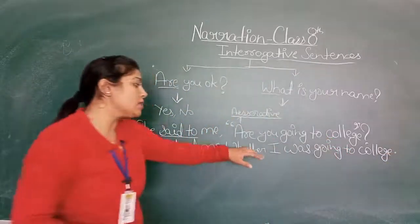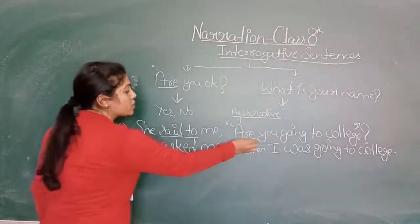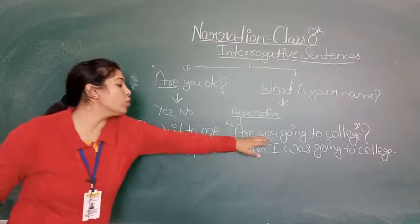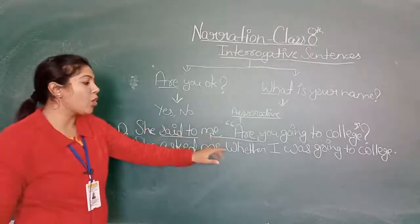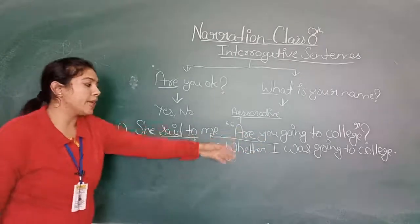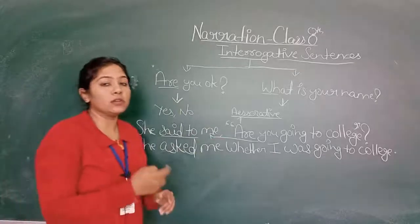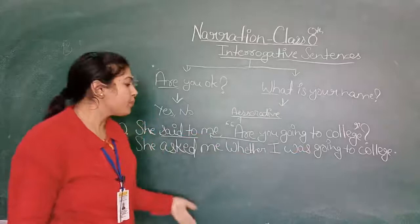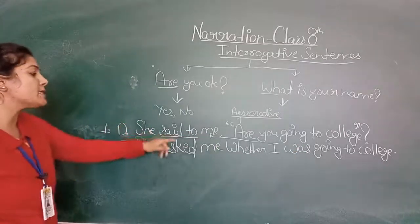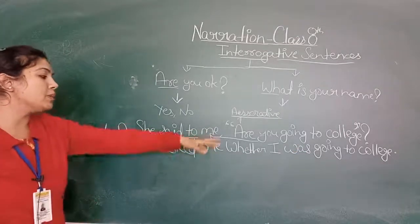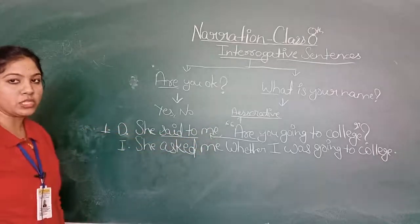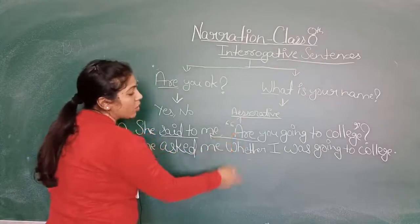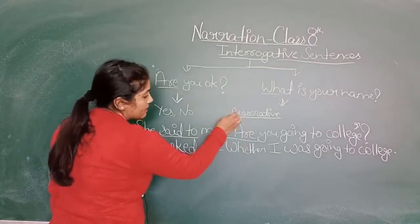So 'you' changes according to the object of the reporting verb, so 'I' comes in. And as for the tense, you already know which tense to change to — so 'was' came in, and 'going to college' stays as it is. So the sentence became: 'She said to me, are you going to college?' becomes in indirect speech: 'She asked me whether I was going to college.' The interrogative sentence has been changed to an assertive sentence in indirect speech.